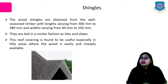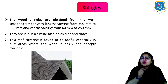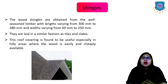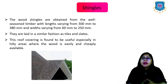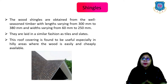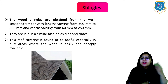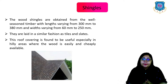Now let us move to the third one which is shingles. Wood shingles are obtained from well-seasoned timbers with lengths varying from 300 mm to 380 mm and widths varying from 60 mm to 250 mm. They are laid in a similar fashion as tiles and slates. This roof covering is found to be useful especially in hilly areas where wood is easily and cheaply available.